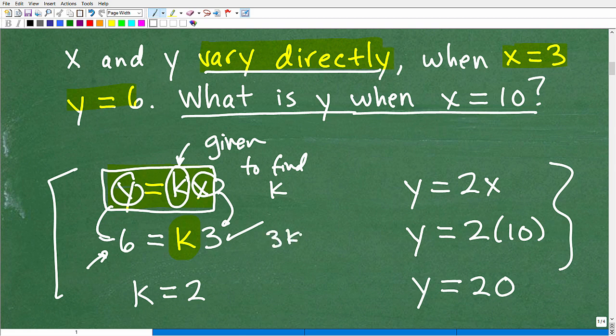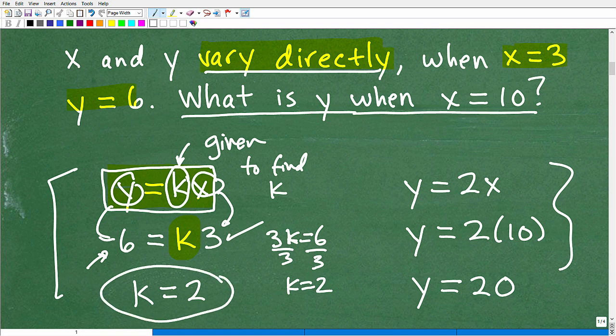All right. So this is 6 equals k3, or you can write it this way, 3k equals 6. Okay. Clearly, you can see this is super easy to solve for k. Just divide both sides equation by 3. And k is equal to 2.